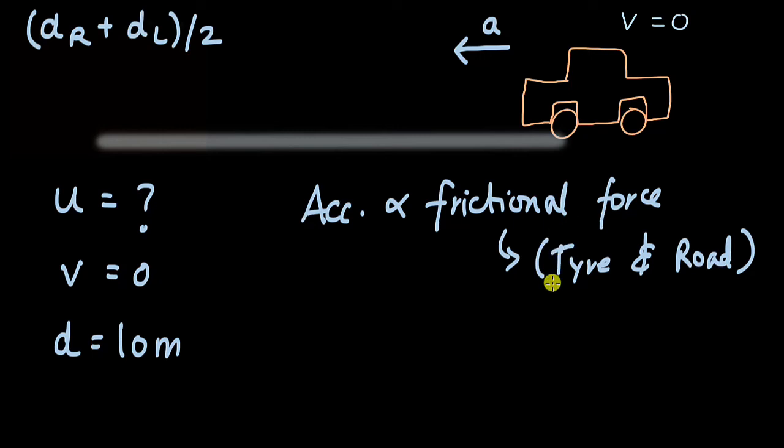And by taking into account these two factors, investigators calculate something called as a coefficient of kinetic friction. This coefficient gives a measure of the frictional force between the tire and the road. And as a result of that, investigators can try and figure out the acceleration that the car faced.